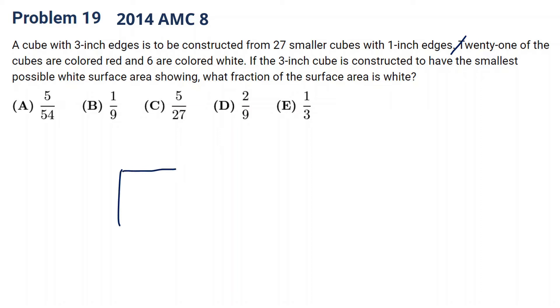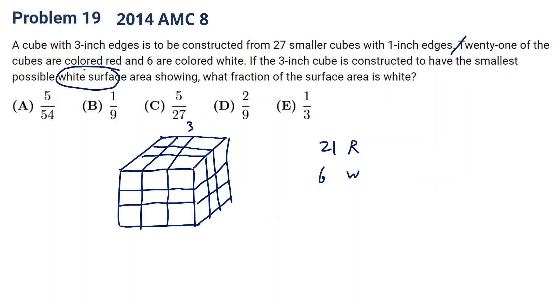So let's first draw a cube as usual. Let's draw a cube. And this is 3 times 3 times 3. So in this question, we seem to need to cut the cube into 27 pieces, 3 times 3 times 3. 21 of the cubes are red. So 21 red and 6 white. If the 3 inch cube is constructed to have the smallest possible white surface area showing, what fraction of the surface area is white?